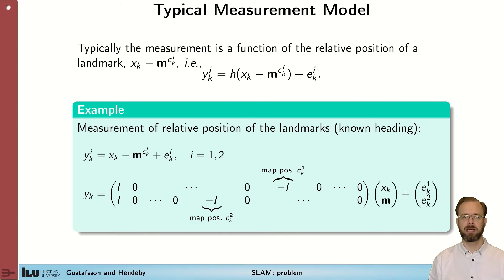Typically, the measurements have more structure than actually pointed out in the previous slide. In almost all cases, at least the ones that we're studying in this course, the measurement will be a function of the relative position of the landmark to the sensor. So the measurement is a function h of the difference between the pose and the landmark position. So we're talking about a function of the distance from me to the landmark, which could be two meters forward and one meter to the left. And then if you have a radar, that would then be turned into a distance and a bearing.